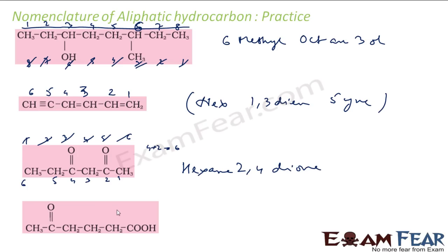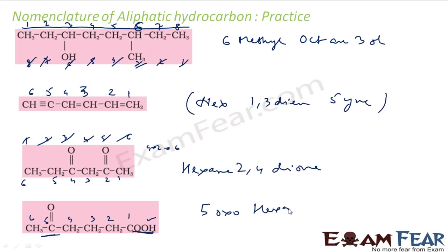Let us take the last one. Here I have a COOH group and a ketone group. Out of these, the COOH is more priority. So I number in this fashion: 1, 2, 3, 4, 5, 6. There is a prefix: at position 5 I have a ketone — 5-oxo. Then 6 carbons so HEXANE, all single bonds, and this COOH is oic acid — so hexane-oic acid. The name is 5-oxohexanoic acid.